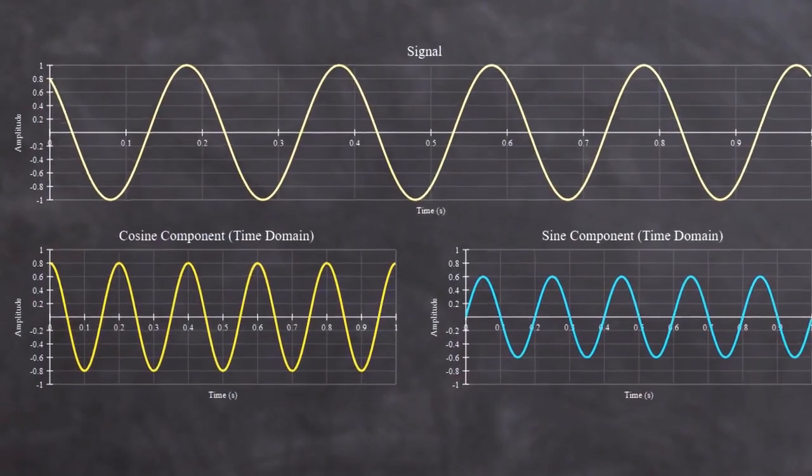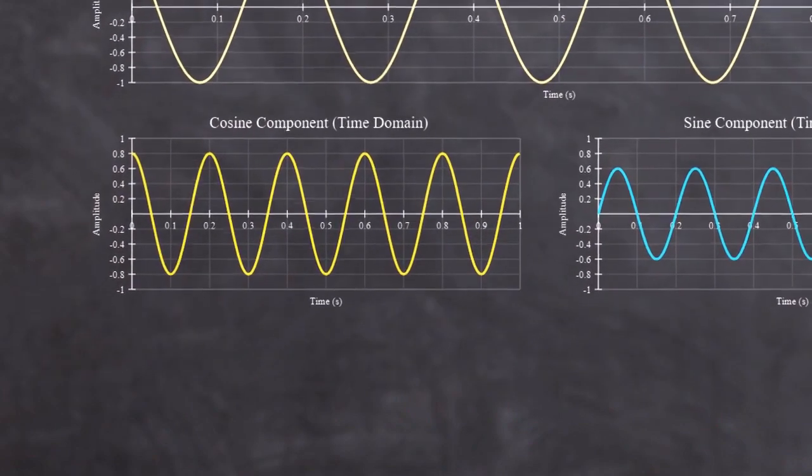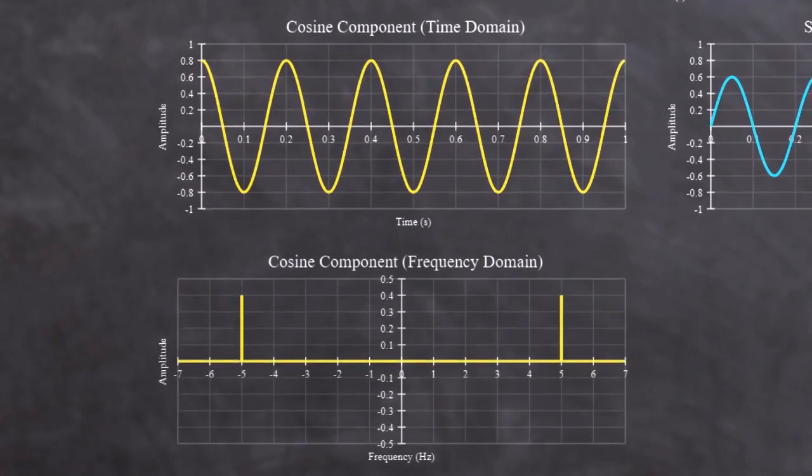If I perform a Fourier transform on the signal to transfer it into the frequency domain, the cosine component looks like this. Here's the peak at 5 Hz.